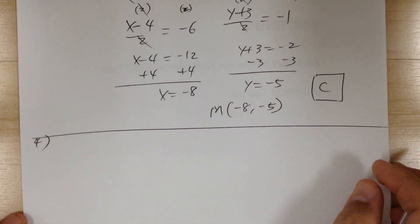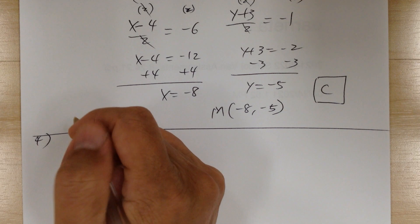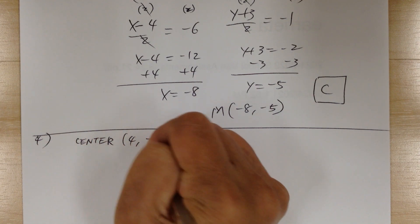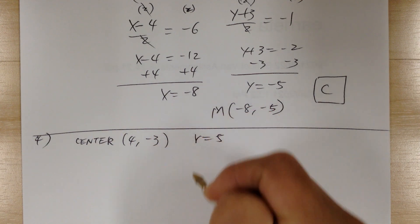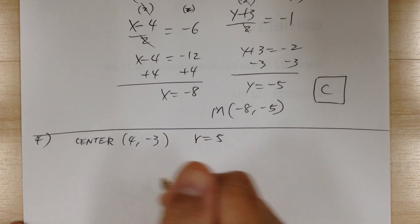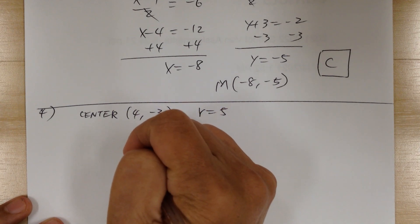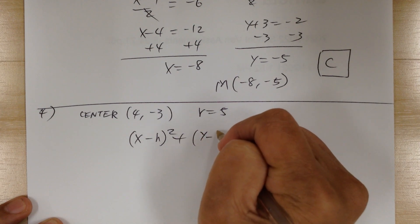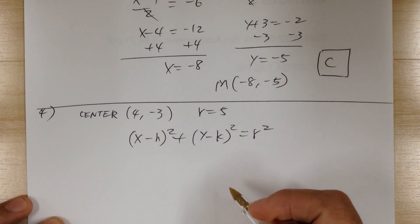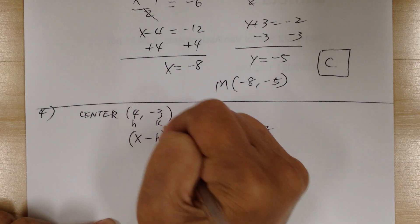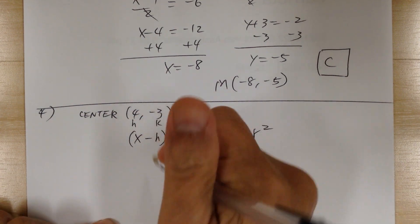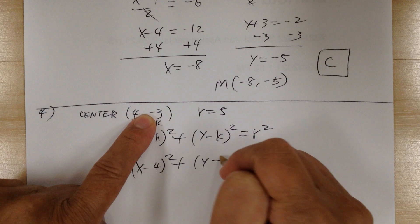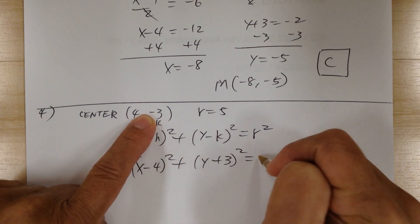Number 4, you're looking for the equation of a circle. You have center at 4, negative 3, and radius equal to 5. Use the center-radius form. For the circle, it's x minus h squared plus y minus k squared equals r squared. That's your h and k, and that's your r. Put everything in: x minus 4 squared plus y minus negative 3, which becomes plus 3, squared, equals 5 squared.